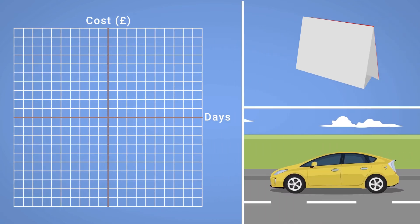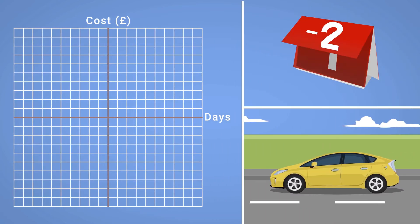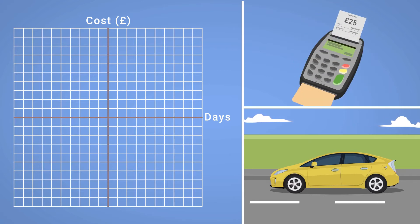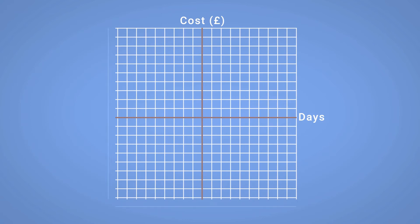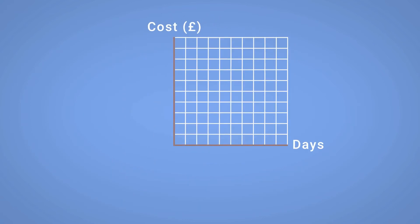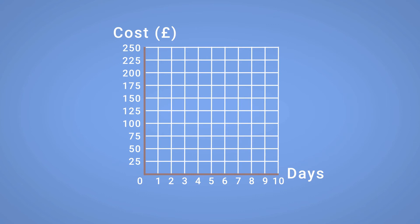Naturally, in this example, it is impossible to hire a car for a negative number of days, or to be charged a negative amount. Therefore, there is no need to show the quadrants that depict negative values. To also make the graph more useful, we can change the scales on the axes, like so.